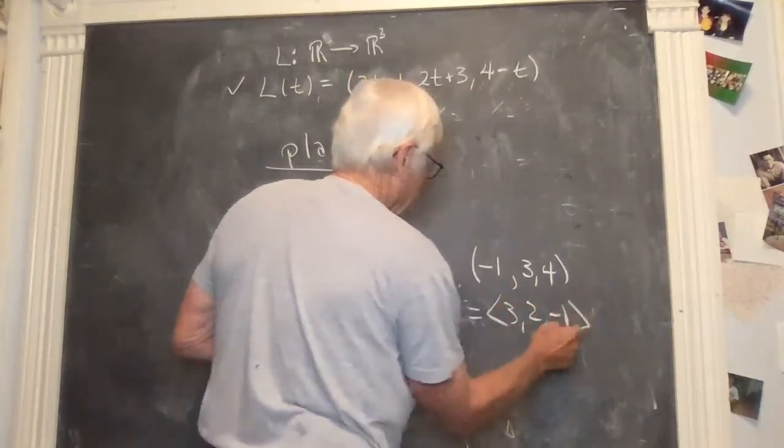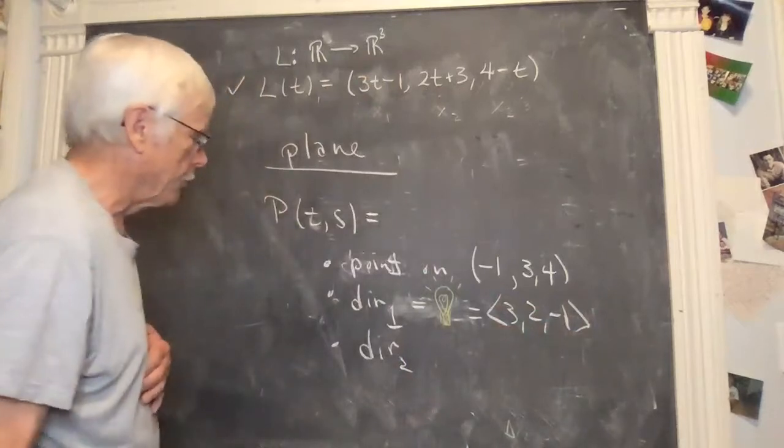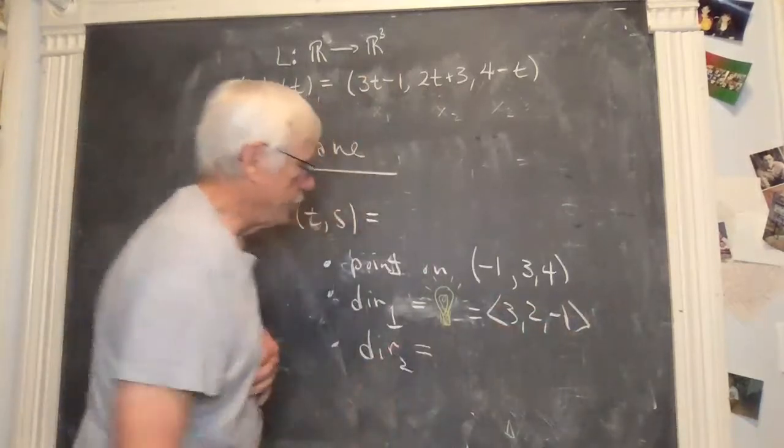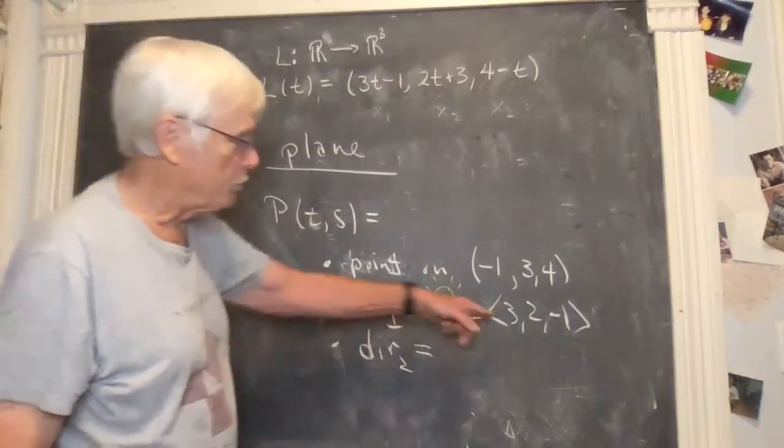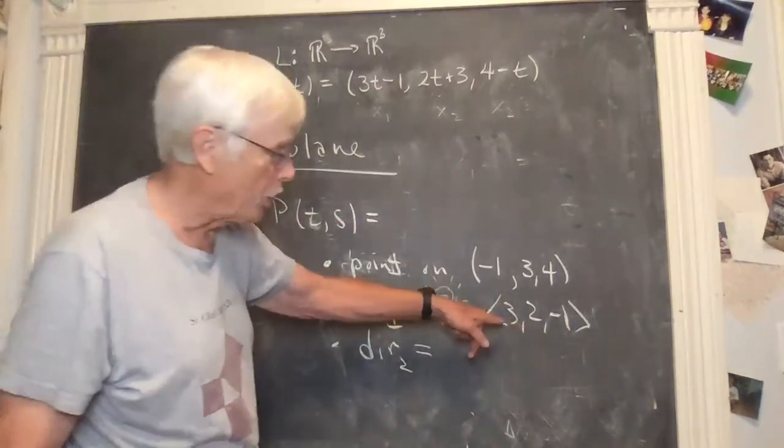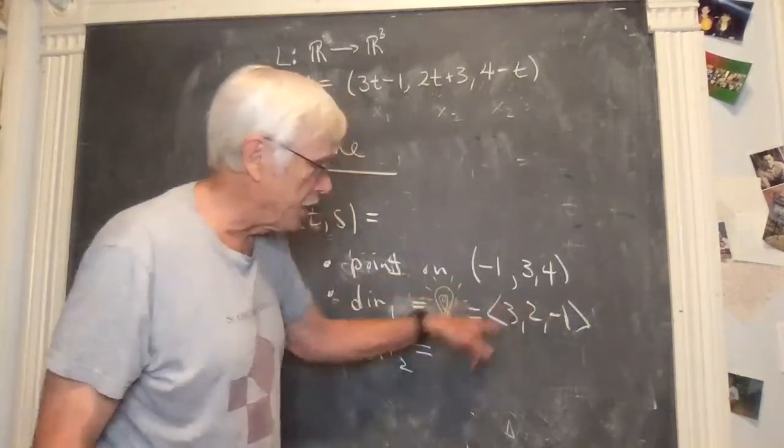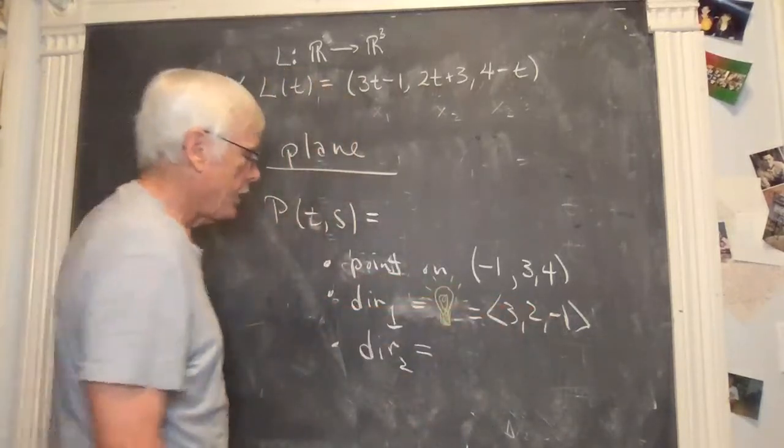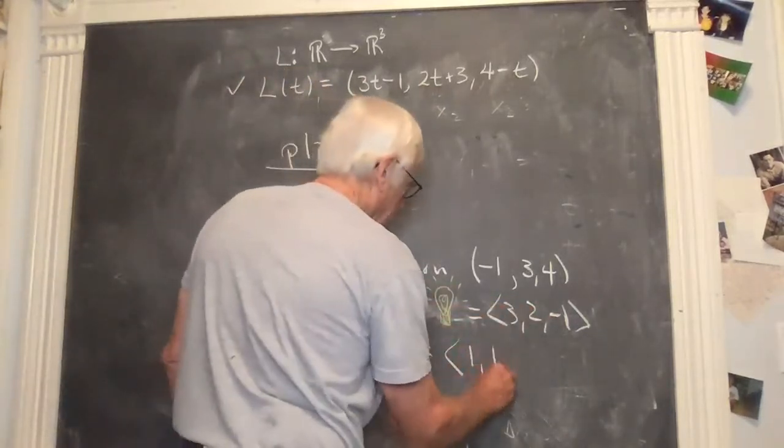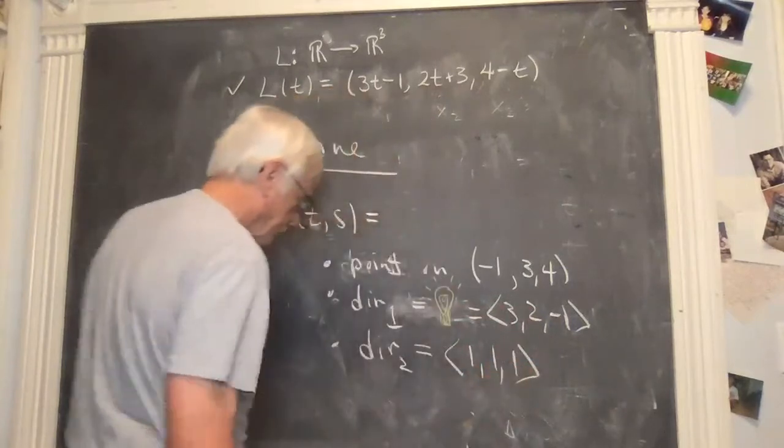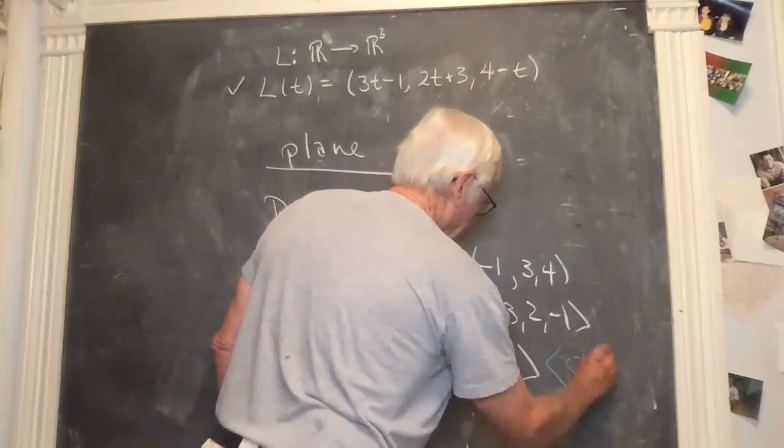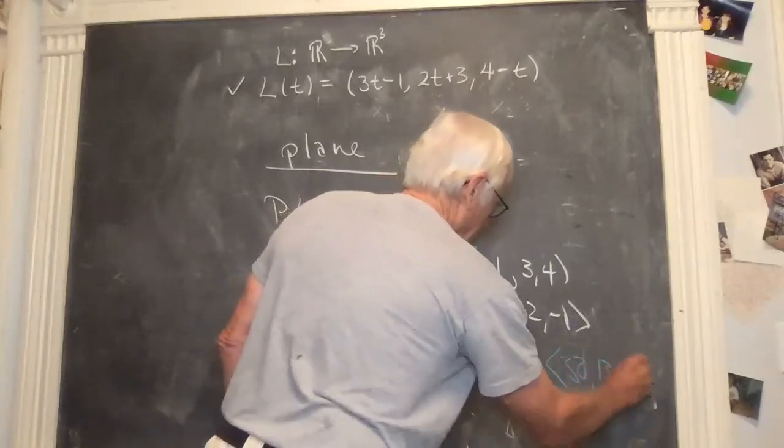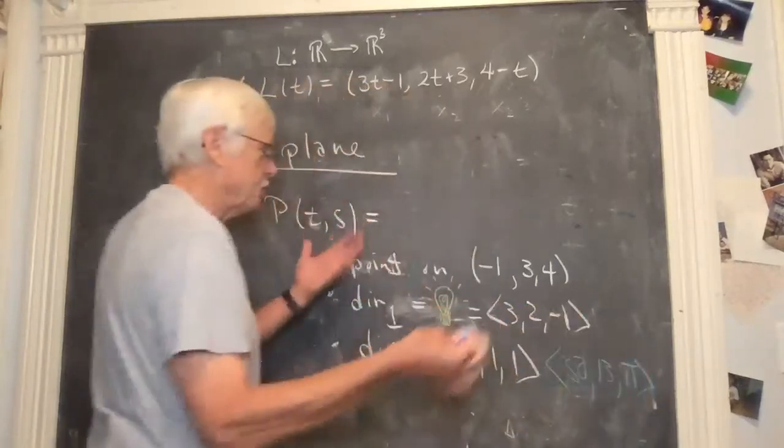And just to emphasize that this is interpreted as a vector. And D two can, dir two can be anything that you want except something parallel to this. You know, you don't want it to be linearly dependent on this or you won't get a plane. So we could take one, one, one, or we could take 50, 13, pi, or sort of anything.